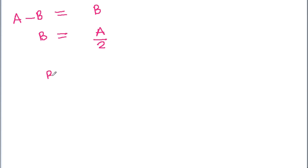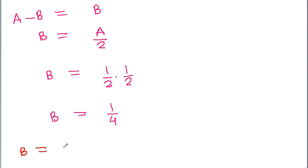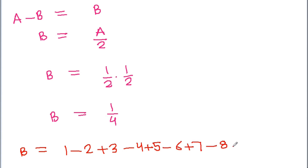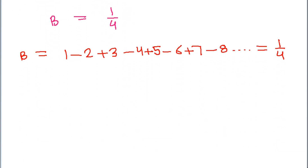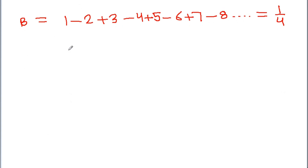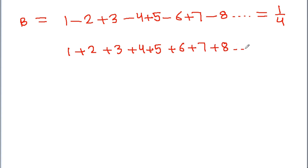So b = 1 by 4, meaning 1 minus 2 plus 3 minus 4 plus 5 minus 6 minus 7 minus 8 and so on equals 1 by 4. Now we have to find the value of c = 1 plus 2 plus 3 plus 4 plus 5 plus 6 plus 7 plus 8 and so on.